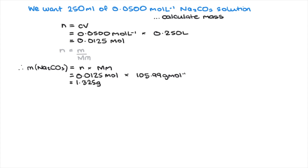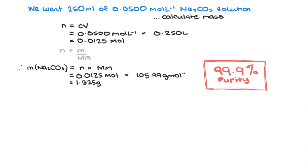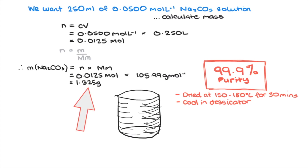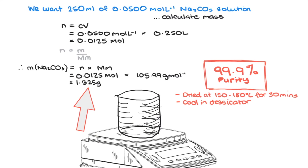We use lab-grade anhydrous sodium carbonate — anhydrous meaning there is no water — with a purity greater than 99.9%. The solid is dried at 150 to 180 degrees Celsius in a drying oven for 30 minutes, then allowed to cool in a desiccator containing drying crystals. The dry solid is then weighed into a dry 50 mL beaker on an electronic balance to at least three decimal places.